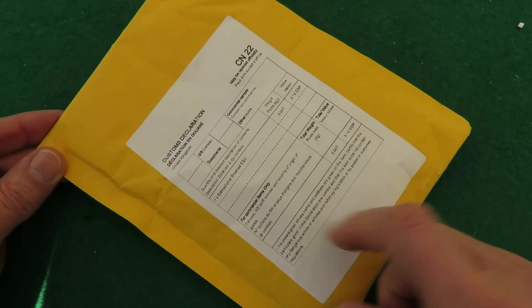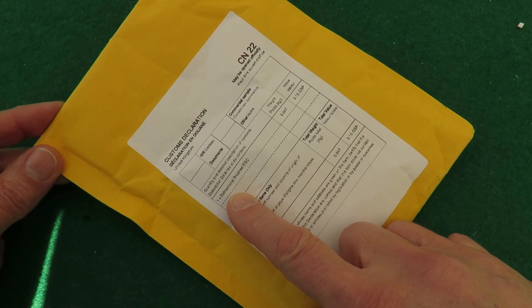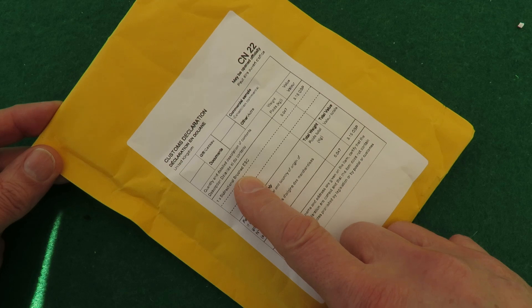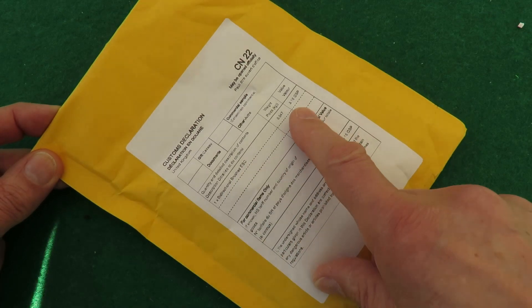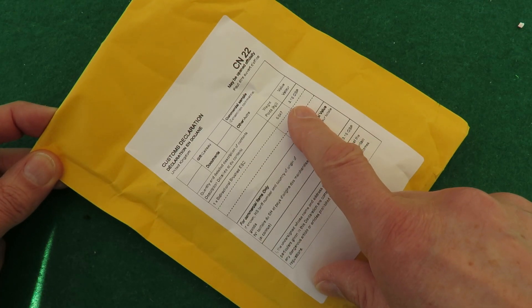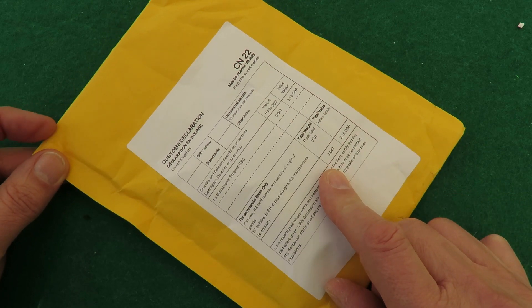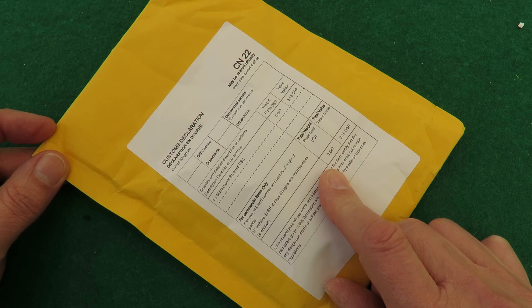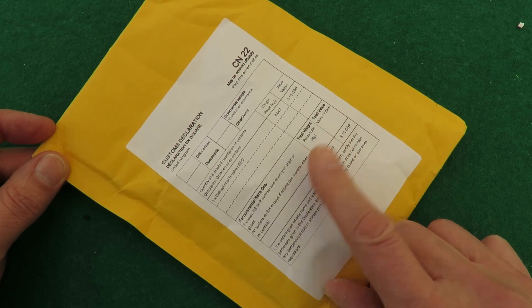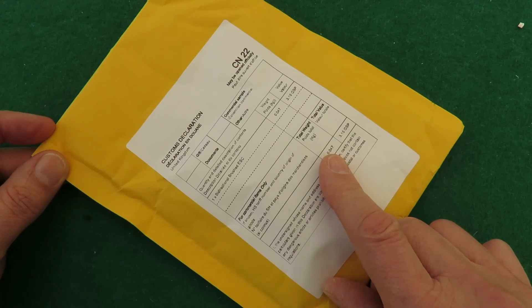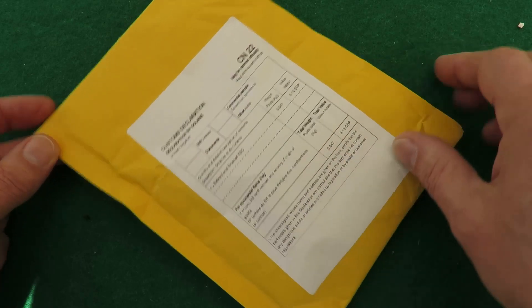I'm going to open it because it says one bi-directional brushed ESC £3.16 GBP. Now as far as I'm aware I ordered two and the total price was about £15 so I don't know what this is.